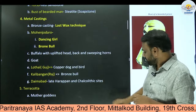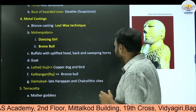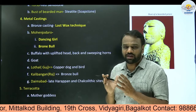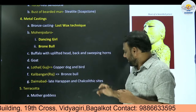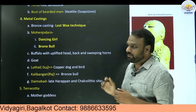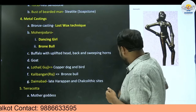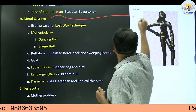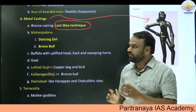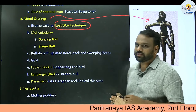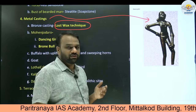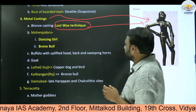Next, metal castings. When creating a casting or shape, we require certain techniques. Indus Valley civilization used a technique called the lost wax technique. This is very important. In prelims, they may frame a question like 'Indus Valley civilization people were unaware of the lost wax technique' — if they frame such a question, that will be wrong, because they were aware of the lost wax technique.